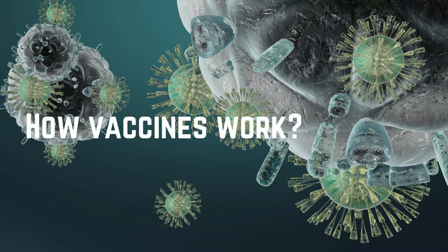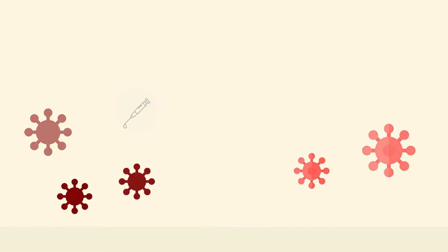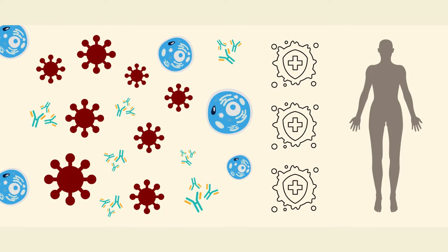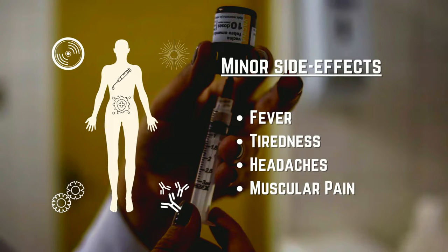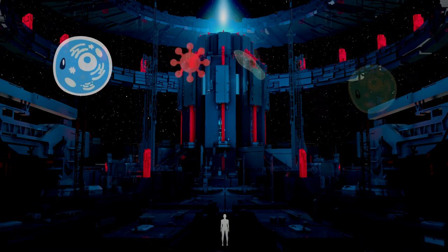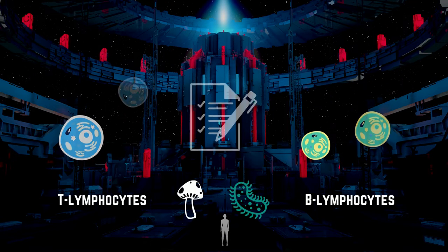How does the body react to a vaccine? Vaccines help develop immunity by imitating an infection. However, while this sort of infection nearly never produces sickness, it does trigger the immune system to create the appropriate antibodies. The imitation illness can sometimes induce mild symptoms like fever after receiving a vaccination. These minor symptoms are common and should be expected while the body strengthens its defenses. When the imitation illness is gone, the body is left with a supply of memory T-lymphocytes and B-lymphocytes that will remember how to fight the disease in the future.